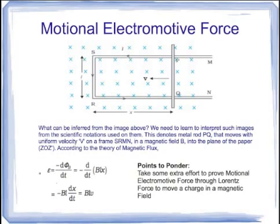You might wonder where the negative sign vanished — that is because the direction of velocity is taken opposite to the normal convention. This is also an electric charge moving in a magnetic field, very similar to a moving coil galvanometer. Therefore, the electrons passing through this rod experience a Lorentz force. Why not take some extra effort to prove motional electromotive force through Lorentz force? This might be a good high-order thinking skills question in an examination. We know that CBSE gives 10% weightage to HOTS.